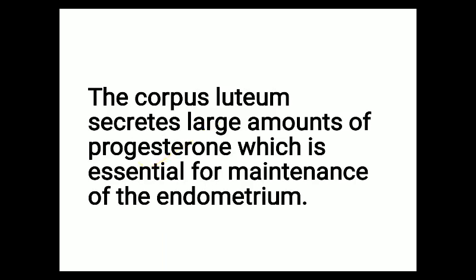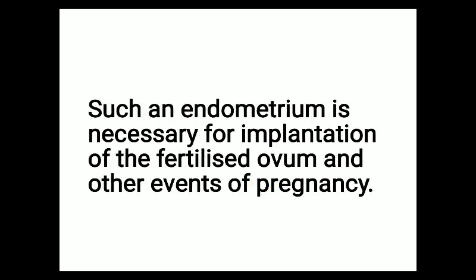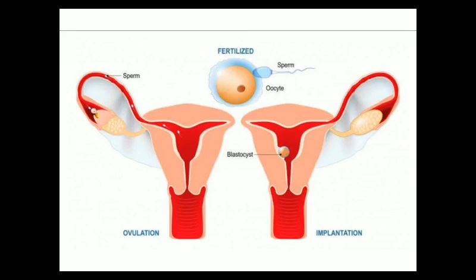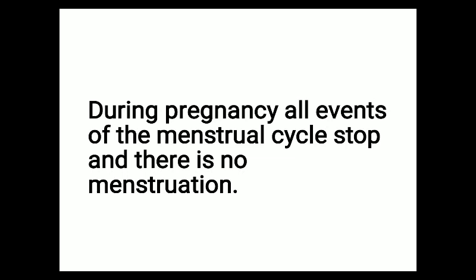The corpus luteum secretes large amounts of progesterone. This progesterone is essential for maintenance of the endometrium. Such an endometrium is necessary for implantation of the fertilized ovum and other events of pregnancy. If fertilization takes place and a zygote forms, the endometrium is necessary for implantation. During pregnancy, all events of the menstrual cycle stop and there is no menstruation.